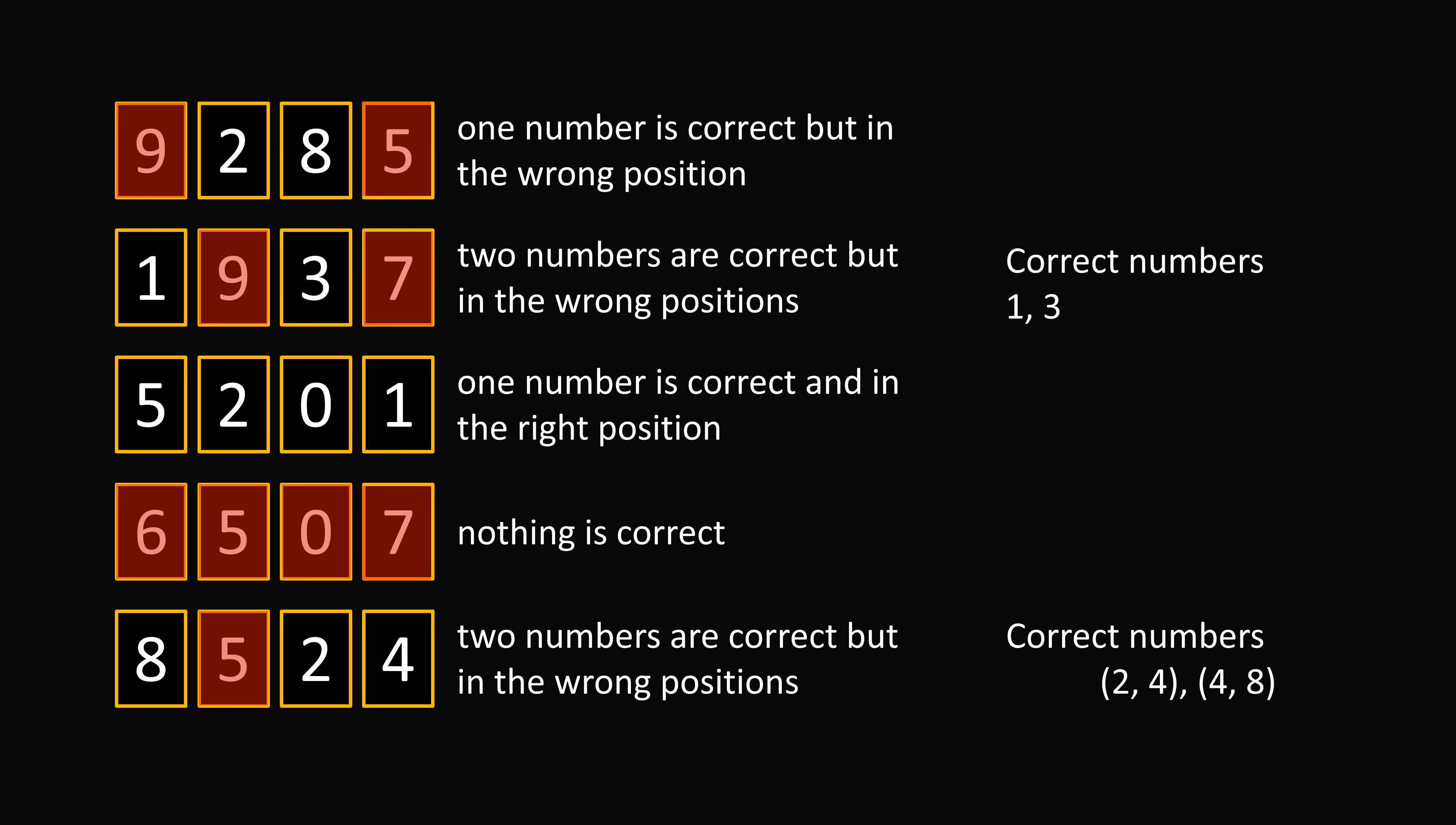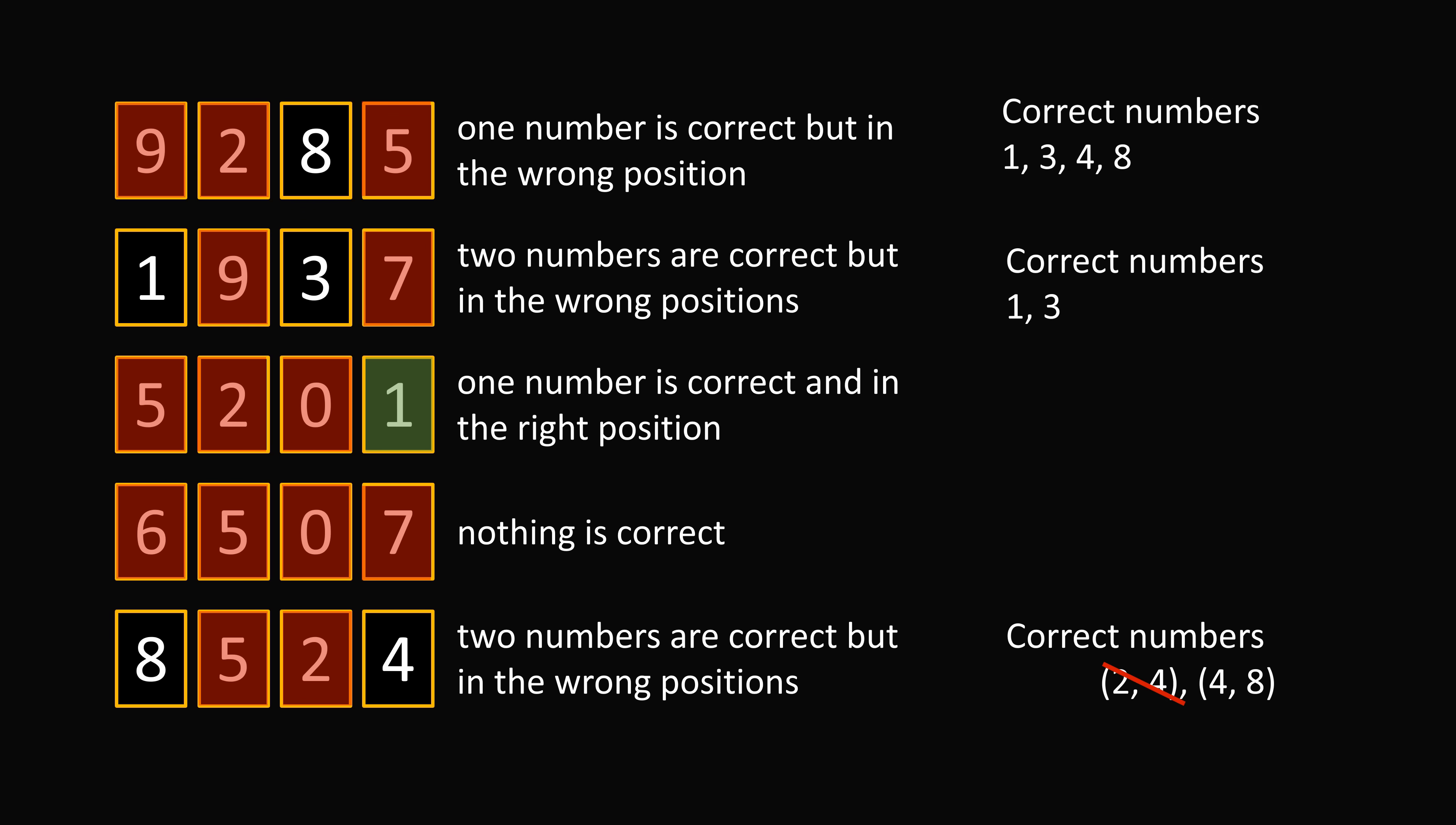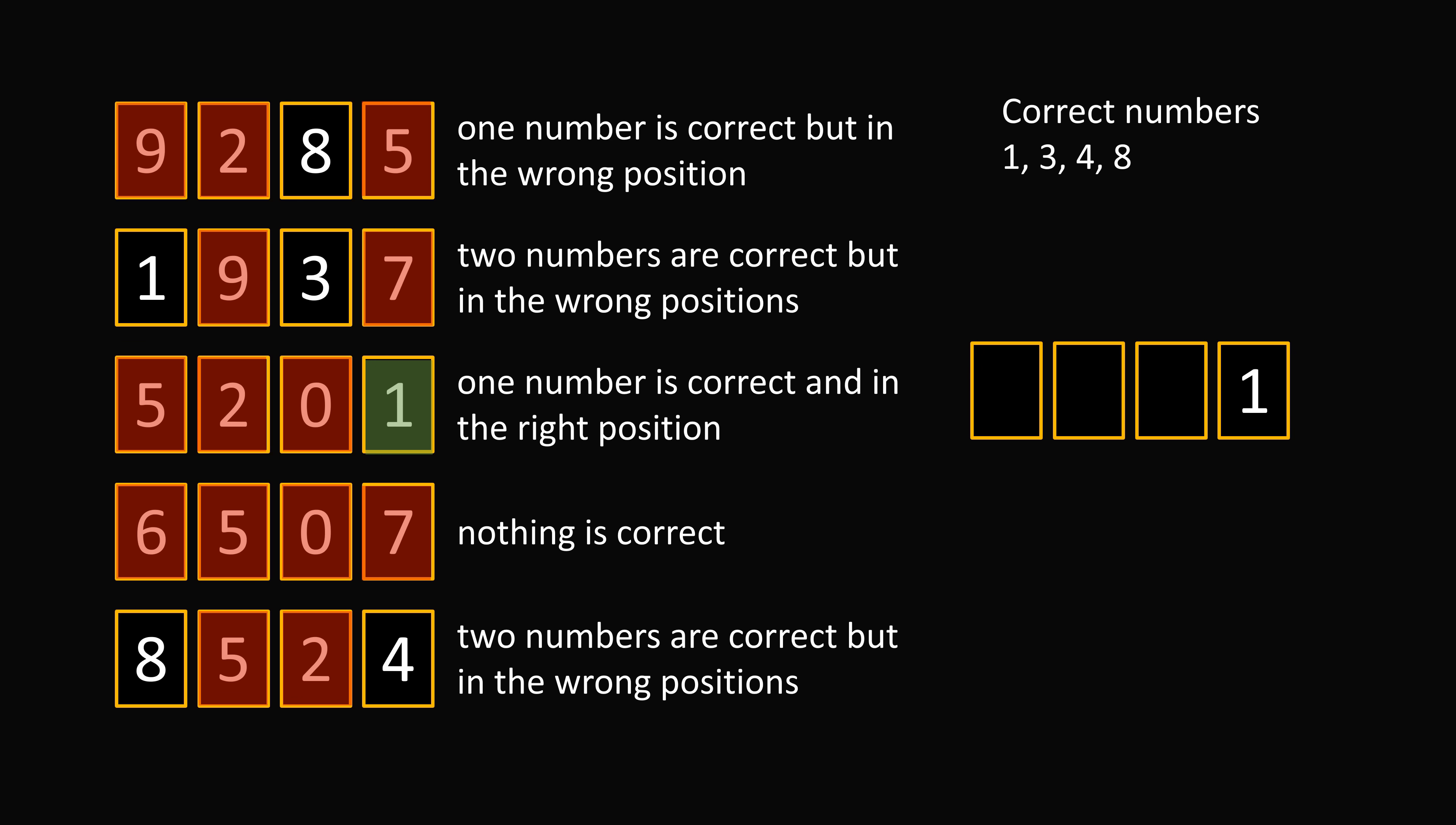We can then look at the clue, 5201. One number is correct and in the right position. We know that 1 is a correct number. So this has to be the correct number, and in the right position. Previously we figured out that 5 is wrong, and that 0 is wrong. So we've now figured out that 2 is a wrong number. So we can eliminate 2 as a number in the first clue, and we can eliminate 2 in the final clue. So 2 and 4 is wrong, and that means 4 and 8 are correct numbers. So we figured out the correct numbers are 1, 3, 4, and 8. So we just need to figure out their order. Now we've already figured out that 1 is in the correct position in the fourth position.